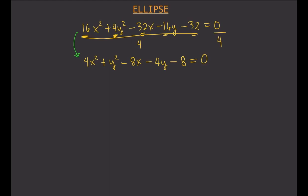Making numbers smaller reduces what you have to calculate later on. The next thing you want to do is group the terms with common variables — group 4x squared and minus 8x together, and also y squared minus 4y together. Then move the constant to the right side: add 8 to both sides, and you get equals 8.